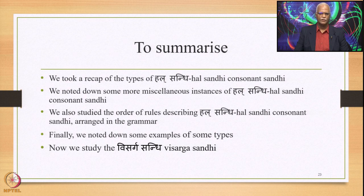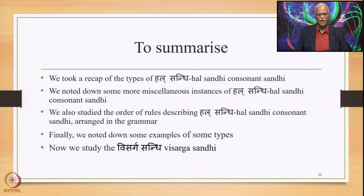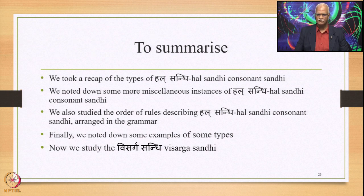To summarize: we took a recap of the types of Hal Sandhi (Consonant Sandhi), noted some more miscellaneous instances — Kutva, Jastva, and Charatva Sandhi — studied the ordering of rules describing Hal Sandhi in Panini's Ashtadhyayi (noting that outputs of these sutras do not become inputs for any further operations), and noted examples from several types. From the next lecture onwards, we will study Visarga Sandhi. Thank you for your patience.